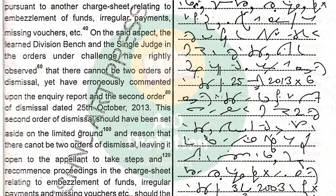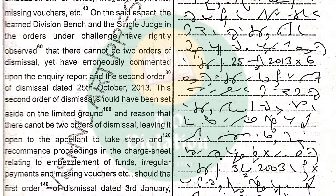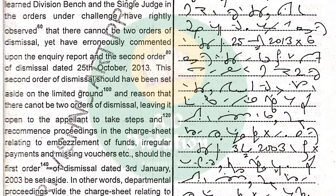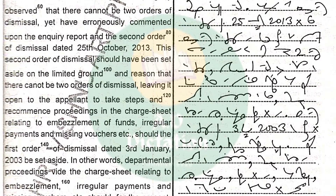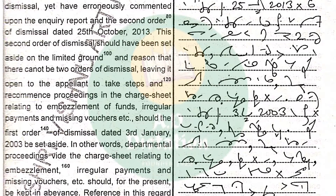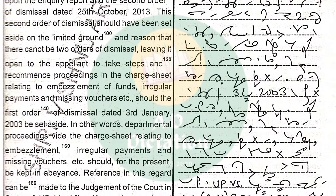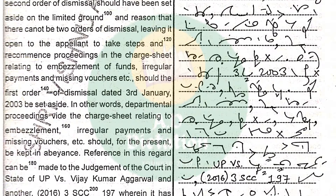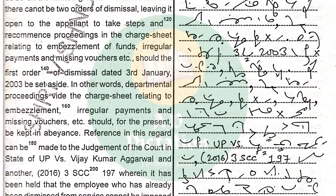This second order of dismissal should have been set aside on the limited ground and reason that there cannot be two orders of dismissal, leaving it open to the appellant to take steps and recommence proceedings in the charge sheet relating to embezzlement of funds, irregular payments and missing vouchers, etc., should the first order of dismissal dated 3rd January 2003 be set aside. In other words, departmental proceedings on the charge sheet relating to embezzlement, irregular payments and missing vouchers, etc.